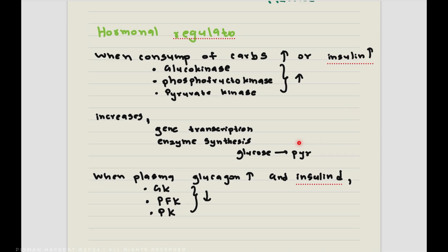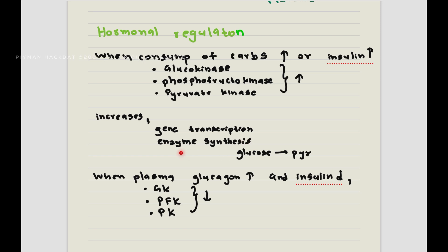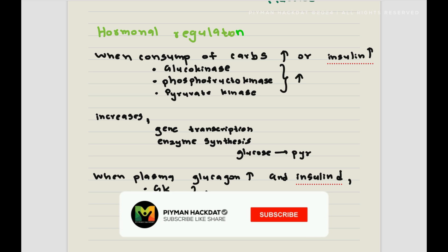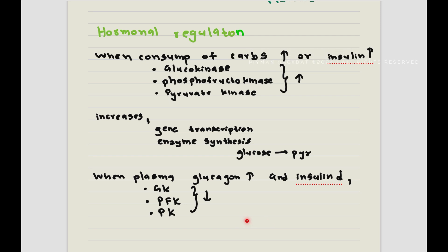Regarding hormonal regulation of glycolysis: when carbohydrate consumption is very high or when insulin is high, the enzymes glucokinase, phosphofructokinase, and pyruvate kinase become elevated — this increases gene transcription and enzyme synthesis. Conversely, when plasma glucagon is high and insulin is reduced, all three enzymes decrease. Increases and decreases of these enzymes directly affect the glycolysis pathway.